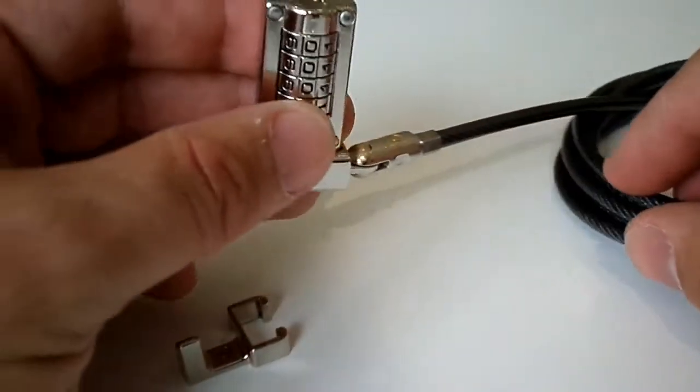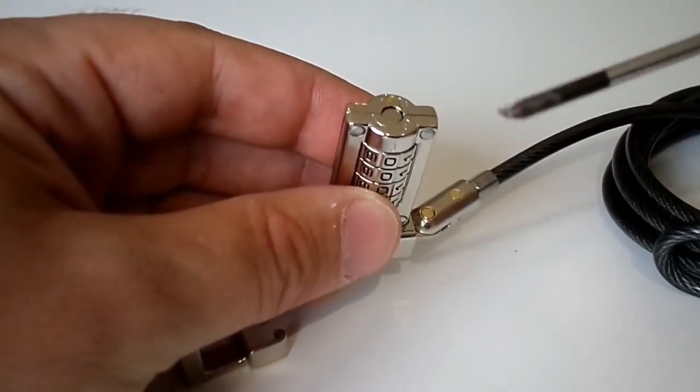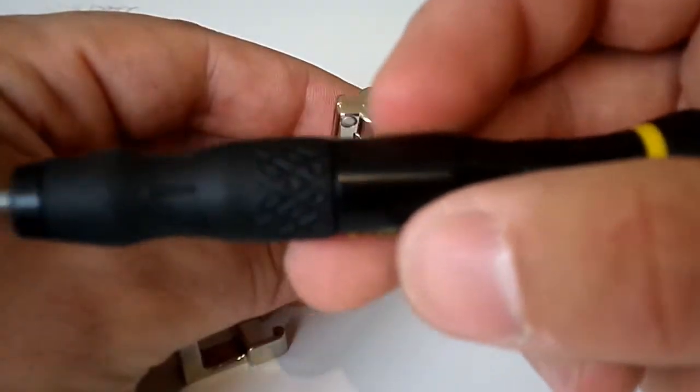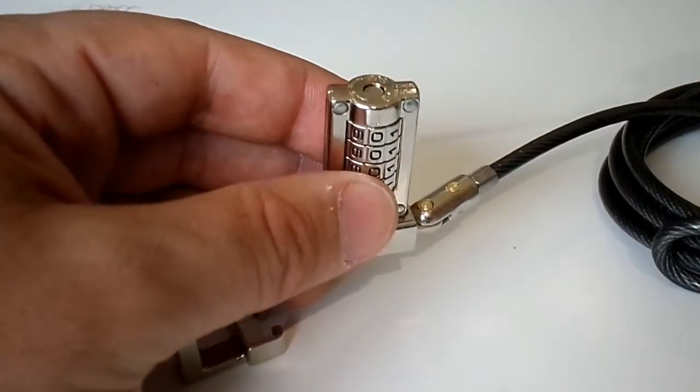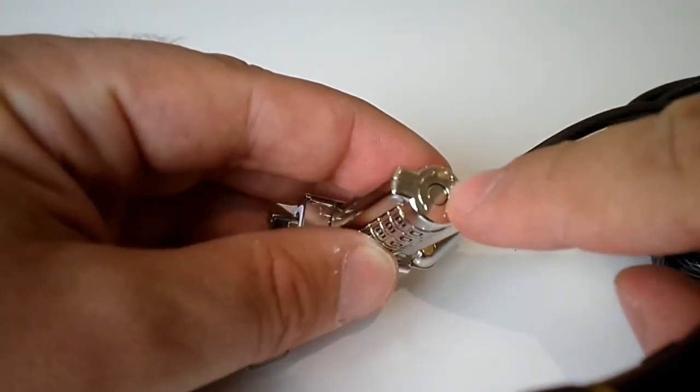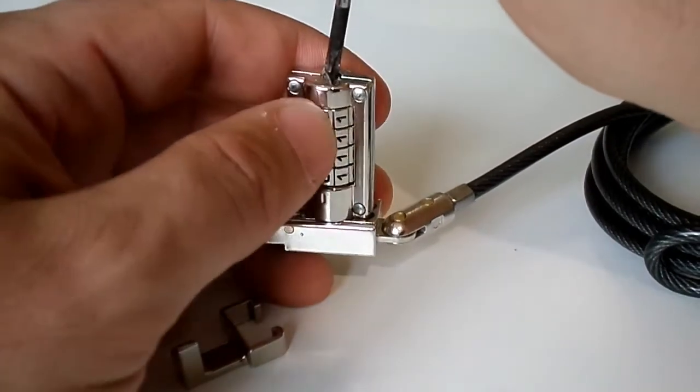Now to set the lock to the combination you want, just use any thin instrument. Here I'm using a Phillips screwdriver, you could use a pen. You just push this barrel here, just push it down, and when you're down and it's in an open position.